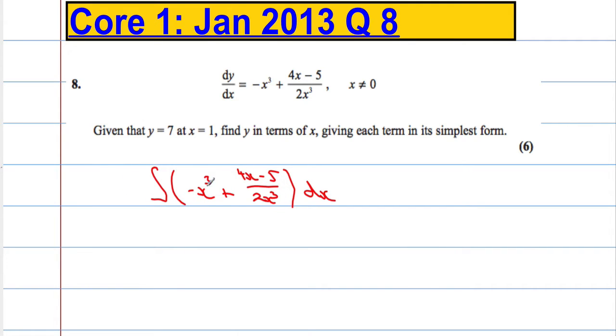OK, now it's quite difficult to integrate this as it is. So what I'm going to do is I'm going to rewrite this expression in here using the laws of indices. So it's going to be still negative x cubed. That's fine. It's going to be plus, splitting this, 4x over 2x cubed minus 5 over 2x cubed. Close off the brackets and that's with respect to x.